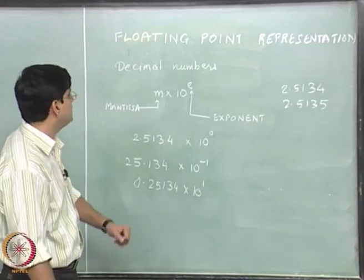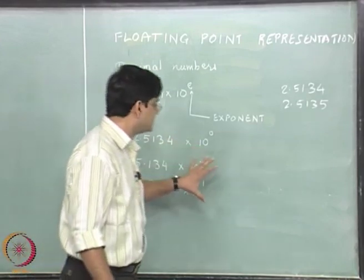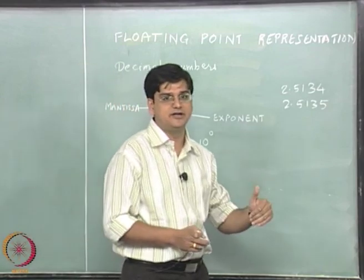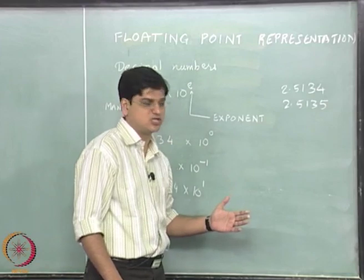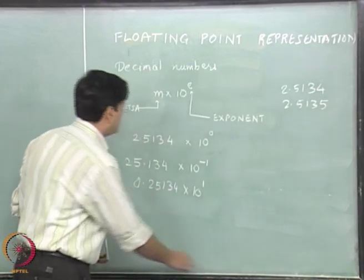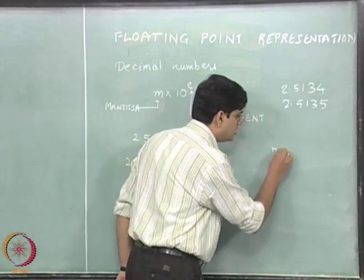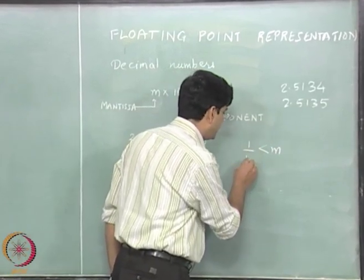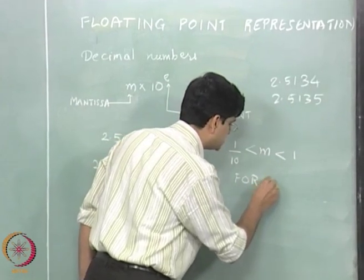However, when you are going to use a floating point representation, we require certain ways of representing numbers that are uniform and standard over various different types of machines. The standard used in floating point representation is that the mantissa should necessarily lie between 1 divided by 10 and 1 for decimal systems.